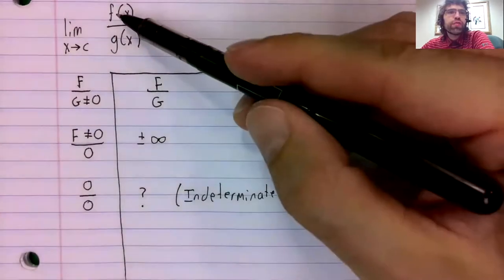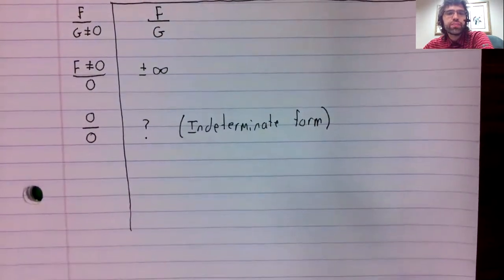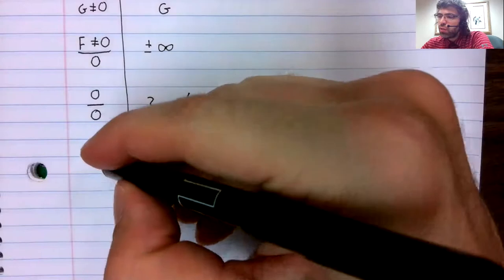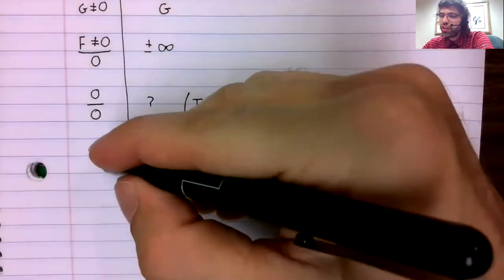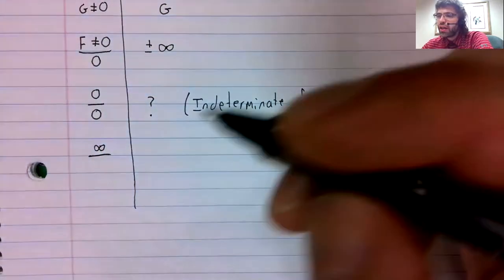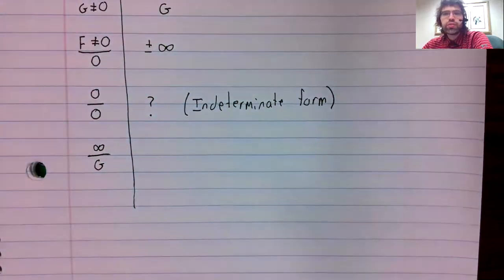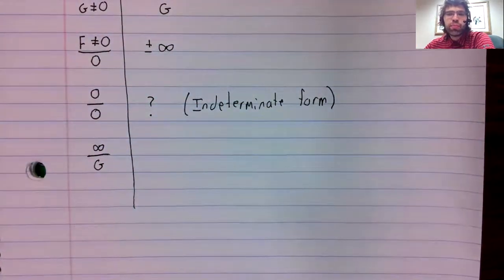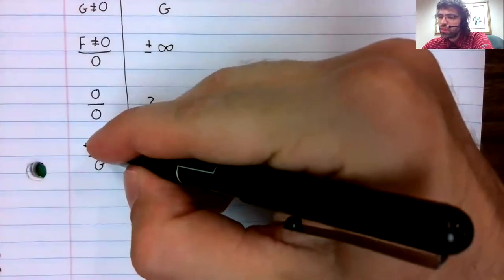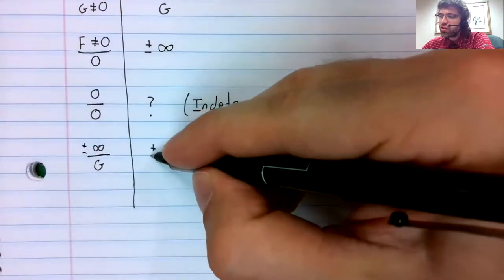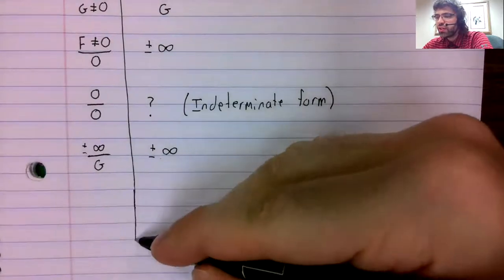What if one or both of these limits is going to infinity? Well, if the numerator is going to infinity and the denominator is going to a finite number, including zero, then this quotient is going to infinity.